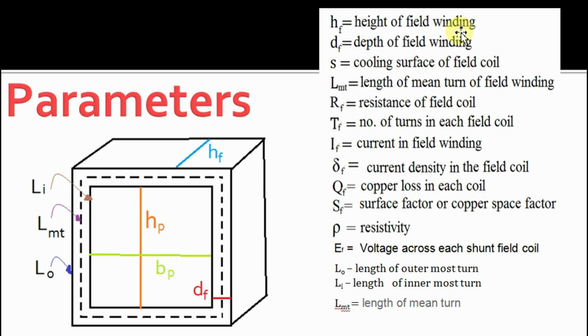df is the depth of field winding. s is the cooling surface of field winding. lmt is the length of mean turn. rf is the resistance. tf is the number of turns. if is the current in field winding. delta is the current density of field.